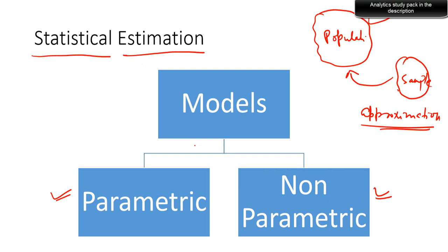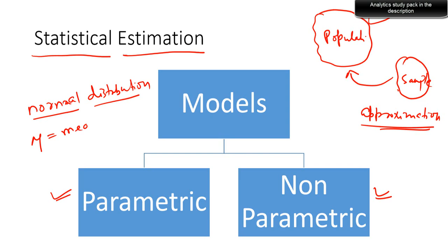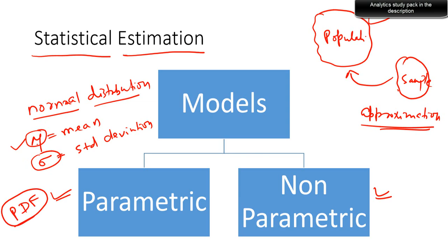Statistical estimations are basically of two types: parametric estimations and non-parametric estimations. Parametric estimation is when your data follows a theoretical distribution — for instance, normal distribution is a parametric distribution. Any parametric distribution involves parameters found from the estimation process. For normal distribution, the parameters are mu (the mean) and standard deviation. If you know mean and standard deviation, you can always replicate or plot the probability density function.